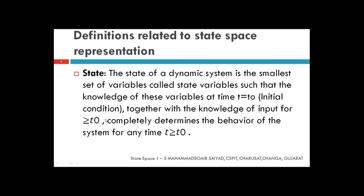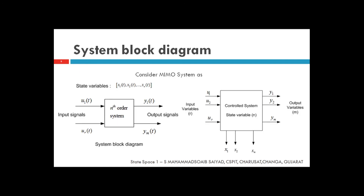To understand state space analysis, we need to know the building blocks: state, state vector, and state space. Consider a MIMO system with inputs u1(t) up to ur(t), and an nth order system producing multiple outputs y1 to ym. This system will have different state variables x1(t), x2(t) up to xn(t). For an nth order system, we will have n state variables. This means an nth order system can be represented by n state variables.